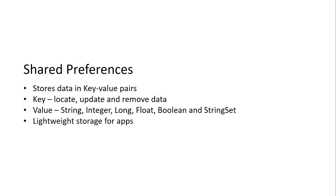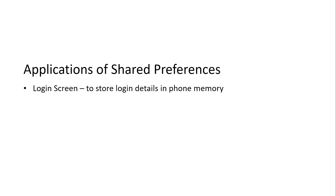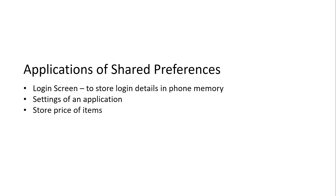Shared preferences is lightweight storage for apps. There are multiple applications of shared preferences. For example, when you log in, there's an option whether you want the app to remember your login details using the Remember Me checkbox. Then there are the settings of your application. Lastly, you can store prices of different items.